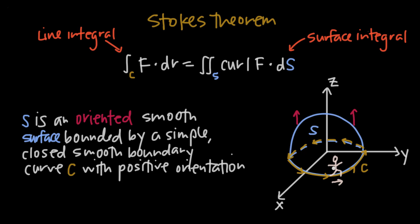One easy way to remember this is to think of yourself walking in the direction of the curve c. With positive orientation we're going counterclockwise. If we're walking in the direction of c and our head is pointed toward the direction of orientation of the surface — in this case, the surface is pointed up, so our head is pointed up too — the surface will always be on our left-hand side. If all those conditions are met, we can use Stokes' Theorem.